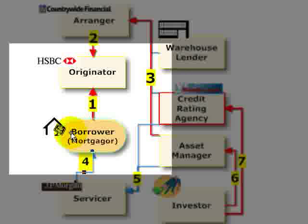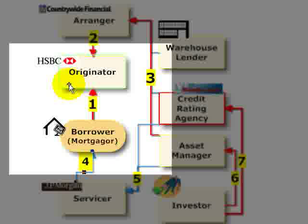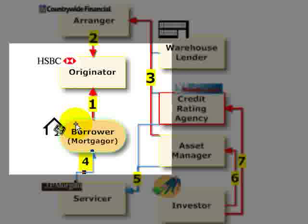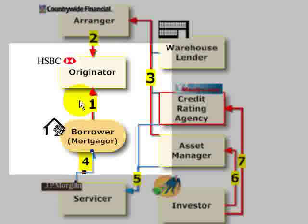We start with the first friction between the borrower and the originator. In our case study, the originator was New Century Financial; in 2006, the largest originator was HSBC. The originator, possibly through a broker, underwrites and funds the loan, and is compensated through fees paid by the borrower and by the proceeds of the mortgage loan sale. This first friction leads to the possibility of predatory lending.